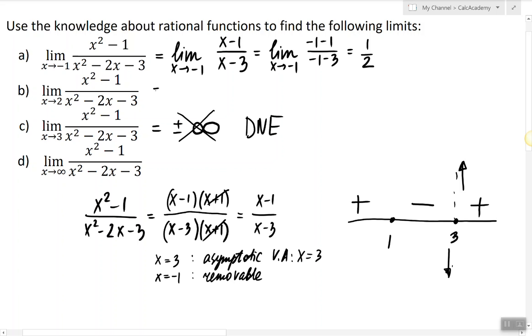At x=2, since 2 is not a point of discontinuity, we can find the limit by plugging 2 into the function: (2²-1)/(2²-2×2-3) = 3/(-3) = -1.